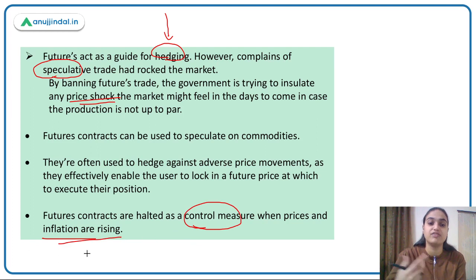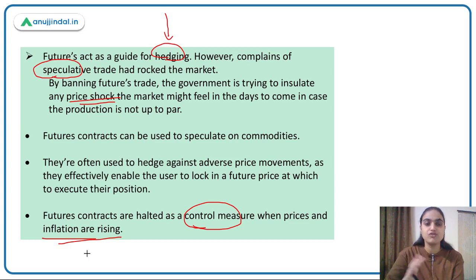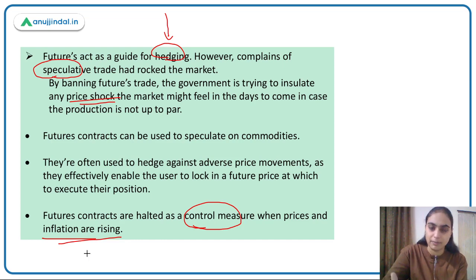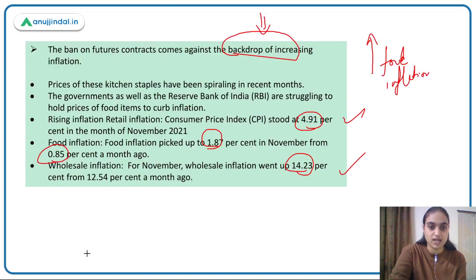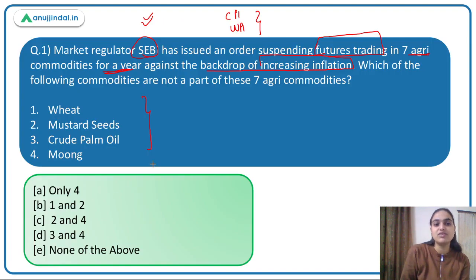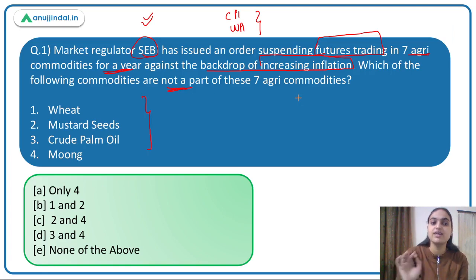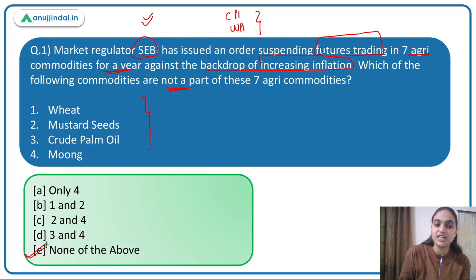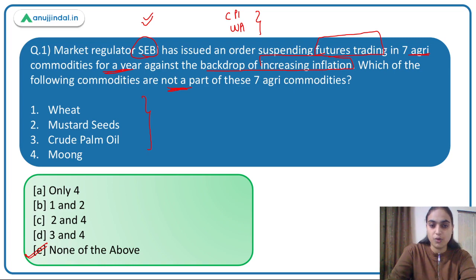Futures contracts are halted as a control measure when prices and inflation are rising. Coming back to the question — which of these commodities is NOT a part of the seven agri commodities? Futures trading has been suspended in wheat, mustard seeds, crude palm oil, and moong, among others. The answer is option E — none of the above — meaning all four listed options are indeed part of those seven commodities.